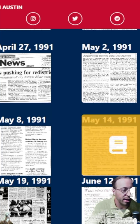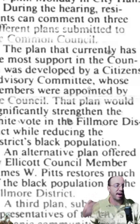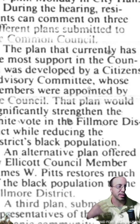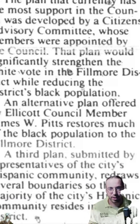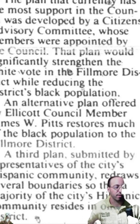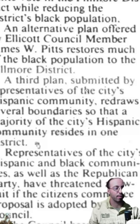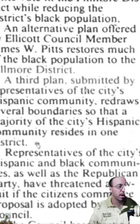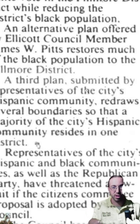There were essentially three plans proposed in 1991 at the public hearing. The first was the citizens advisory committee's official plan, which significantly strengthened the white vote in Fillmore while reducing the district's black population. The second was an alternative plan by Ellicott council member James Pitts that restored much of the black population to Fillmore. The third was submitted by the Hispanic community — the Hispanics for Equitable and Fair Reapportionment — which redrew several boundaries so that a majority of the city's Hispanic community resided in one district, the Niagara district.